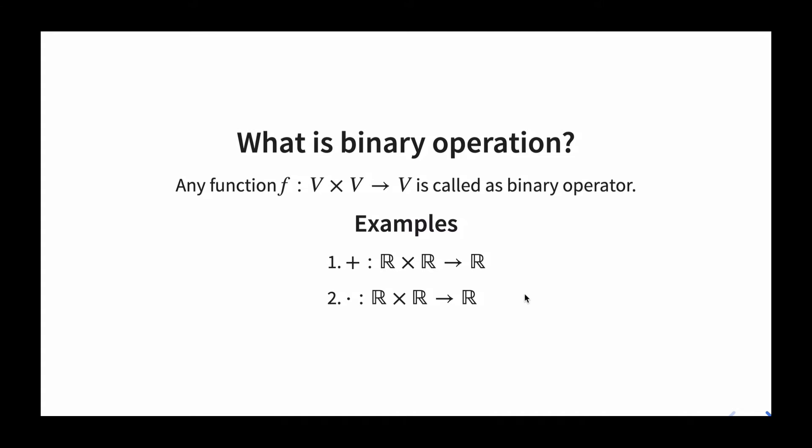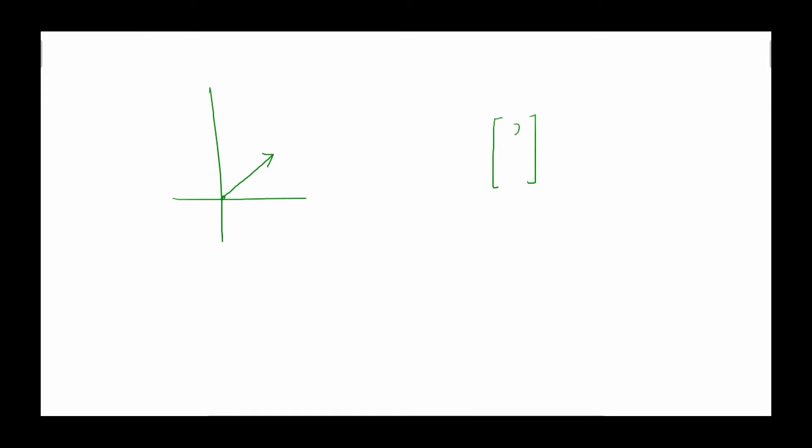What is a vector? For a physicist it is one thing, for a computer scientist it is different, and for a mathematician it is different. A physicist represents a vector as something with a tail and a head — a directed component — and expresses it as an object which has a direction and a magnitude. For a computer scientist, a vector is just an array of numbers, something like [2, 3, 4].